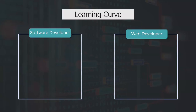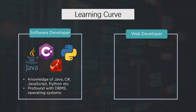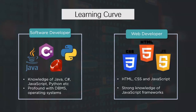Next is the learning curve. Software engineering never focuses exclusively on coding, but you should know at least a couple of languages and have a deeper understanding of how they function. Key languages include Java, C#, Python with its libraries and frameworks, JavaScript, and Ruby. A web developer should be familiar with HTML, CSS, JavaScript libraries and frameworks like React and Angular, and back-end frameworks like Python Django and Node.